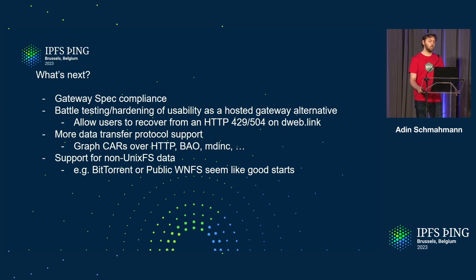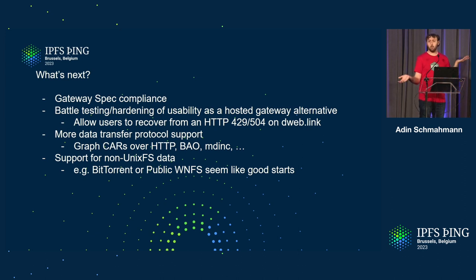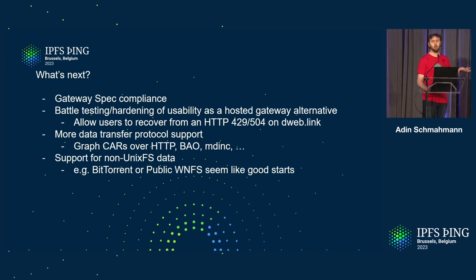It would be pretty cool to use something like this so that if you hit a central service like dweb.link and get a 429 — sorry, you asked us for too much stuff, or hey, you asked for a 100-gigabyte file, no thank you — you can just do it yourself. That option is now available to you. And adding support for alternative protocols and data types that there's currently no way to get at with the commonly deployed gateway implementations.